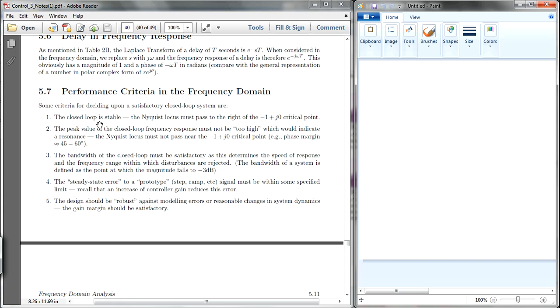So in order for a closed-loop system to be stable, the Nyquist locus must pass to the right of the negative 1 plus 0j. In the Nyquist plot, it is minus 1 plus 0j, so it will be at this point. So it must pass to the right.